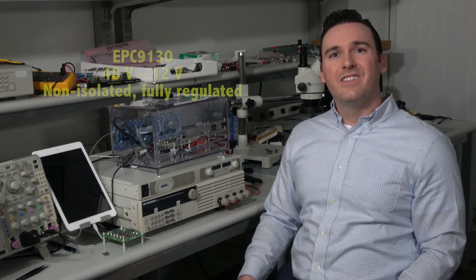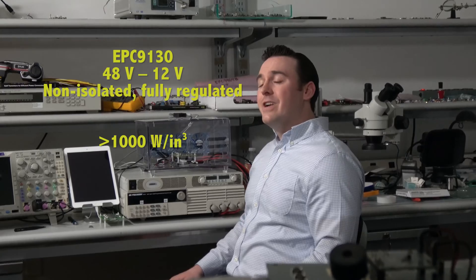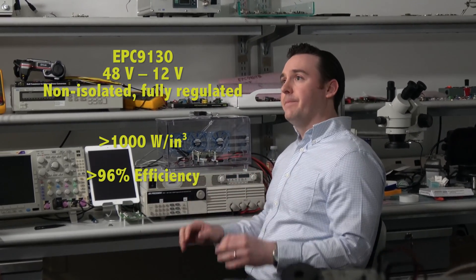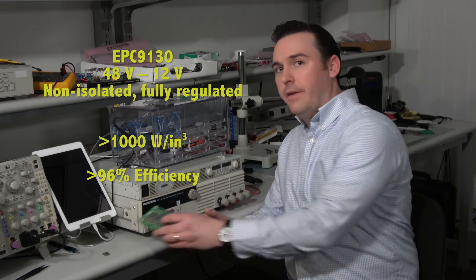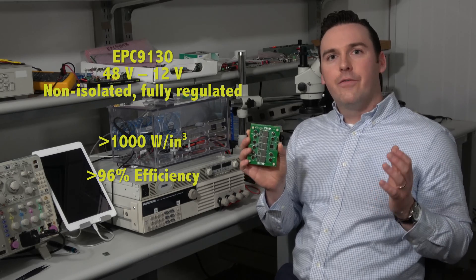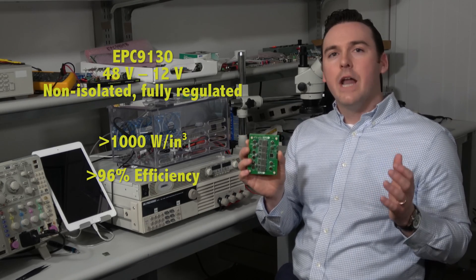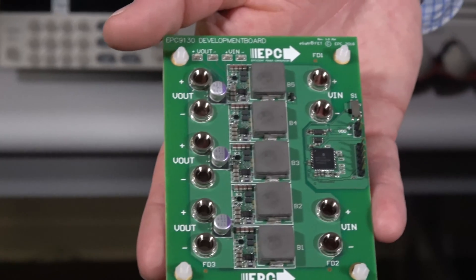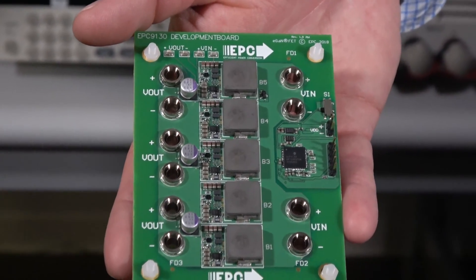With power density exceeding 1,000 watts per cubic inch and over 96% efficiency, the EPC-9130, a 5-phase 48V to 12V non-isolated, fully regulated bus converter, offers exceptional performance, small size, and low cost.